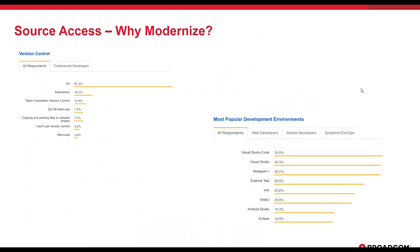Looking at some stats from a recent Stack Overflow poll: on the left, version control — almost 90% of organizations are using Git. The world seems to be standardizing around Git, and there are good reasons for that, which we'll discuss later.